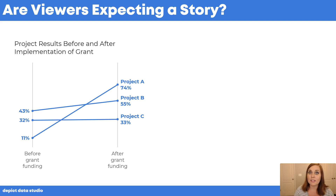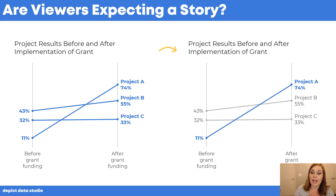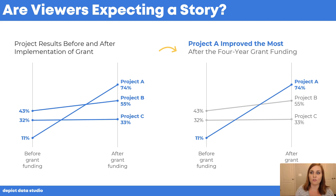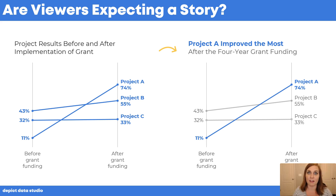The storytelling version guides people's eyes to one section of the graph with a darker color, then rewrites the title to state the takeaway message directly: 'Project A improved the most after the four-year grant funding.' Same techniques as before — a storytelling title and dark colors.